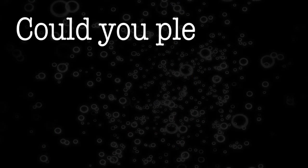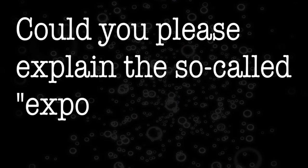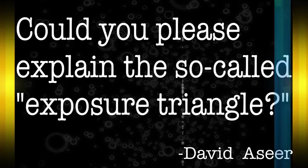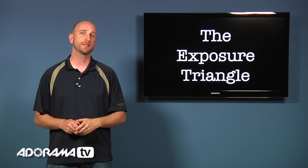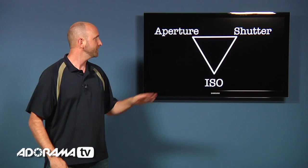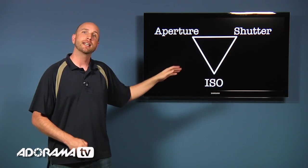This week we had a question from David A. Sear. And David wrote, could you please explain the so-called exposure triangle? Well the exposure triangle is made up of three things. It's the aperture, the shutter and ISO.